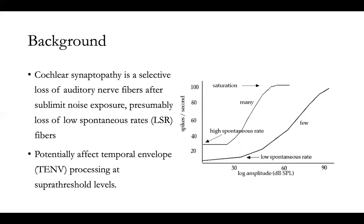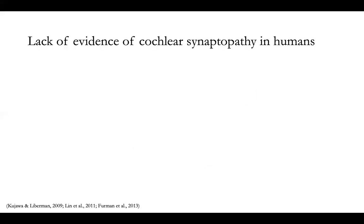Under cochlear synaptopathy, fibers with low spontaneous rates are selectively damaged, which could cause a series of issues including supra-threshold temporal envelope processing. However, when people try to find this issue in human listeners, the results are usually inconsistent.